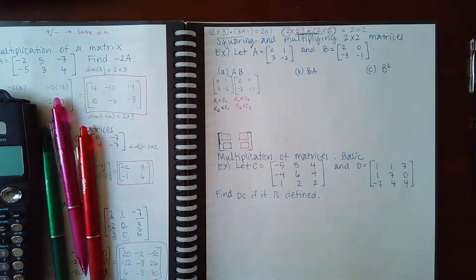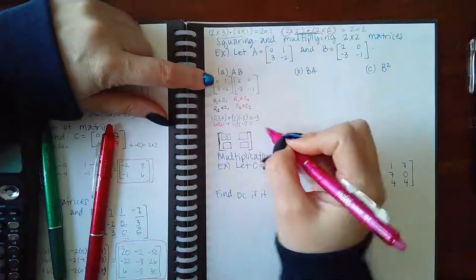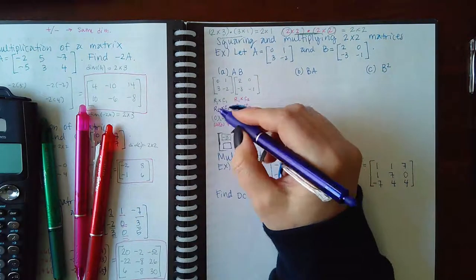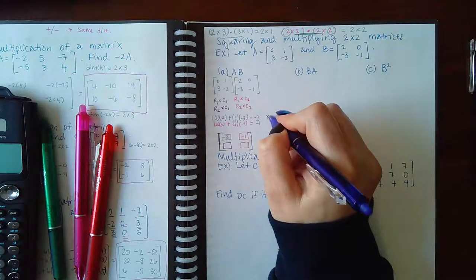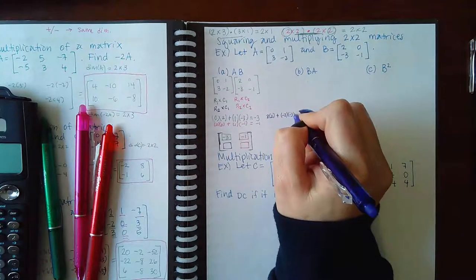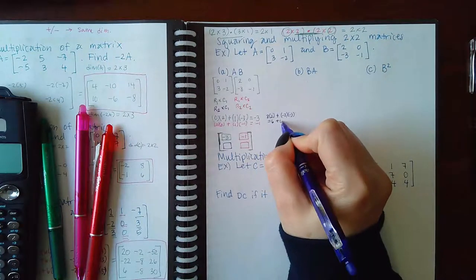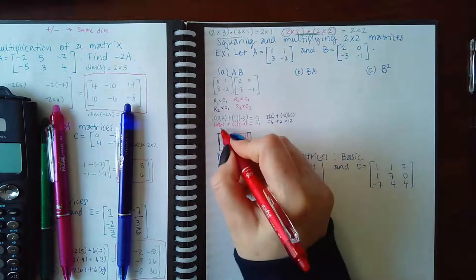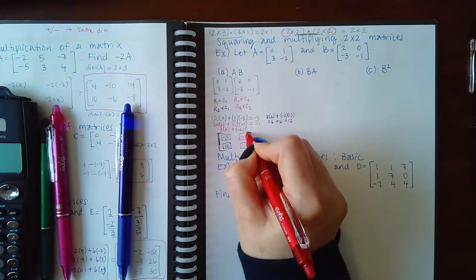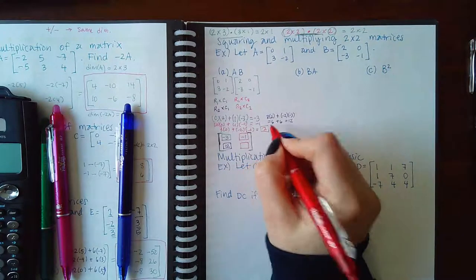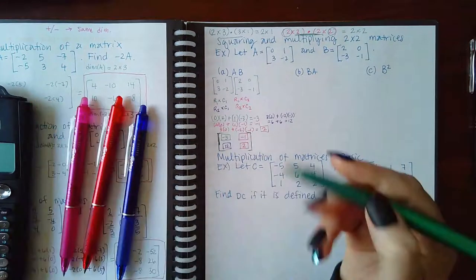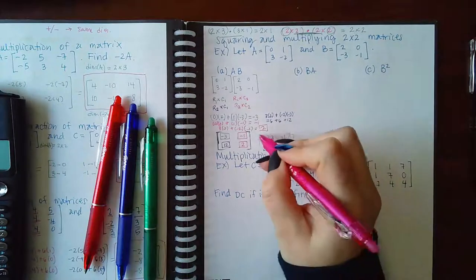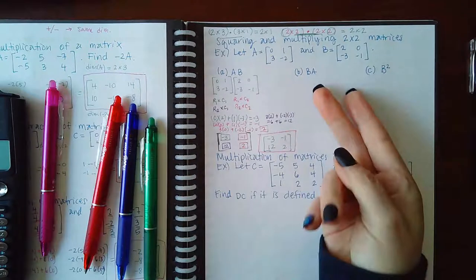Computing row one times column one: zero times two plus one times zero equals zero, zero times negative three plus one times negative one equals negative one. Row two times column one: three times two plus negative two times negative three equals six plus six, which is twelve. Row two times column two: three times zero plus negative two times negative one equals zero plus two, which is two. The answer is the two by two matrix: negative three, twelve, negative one, two.